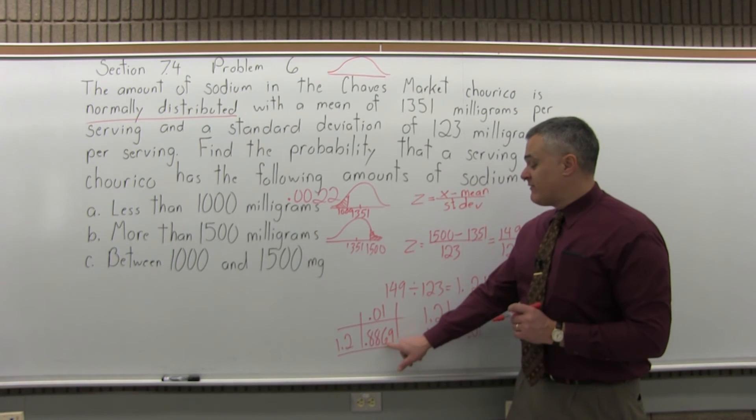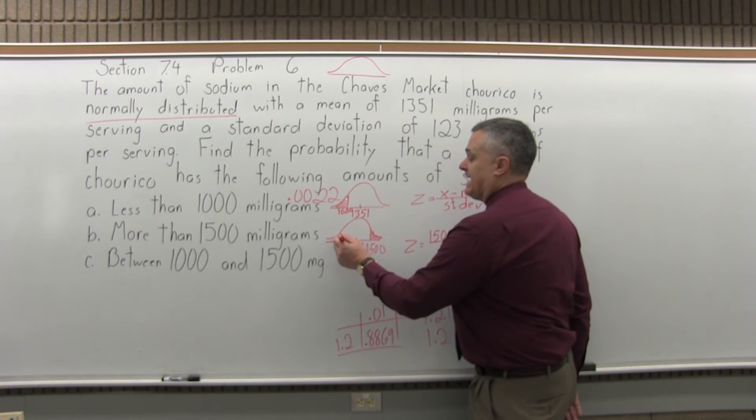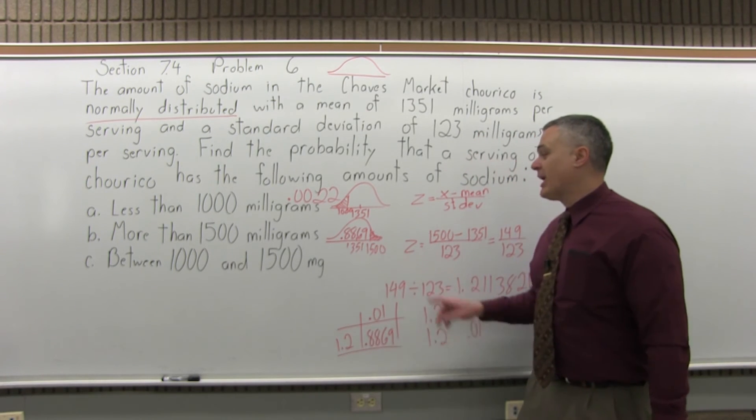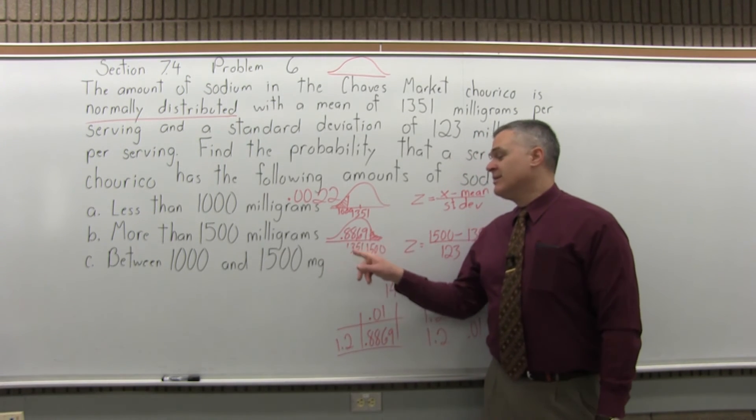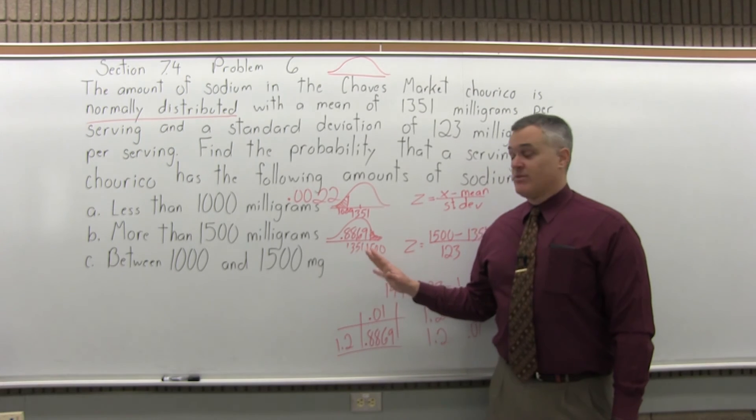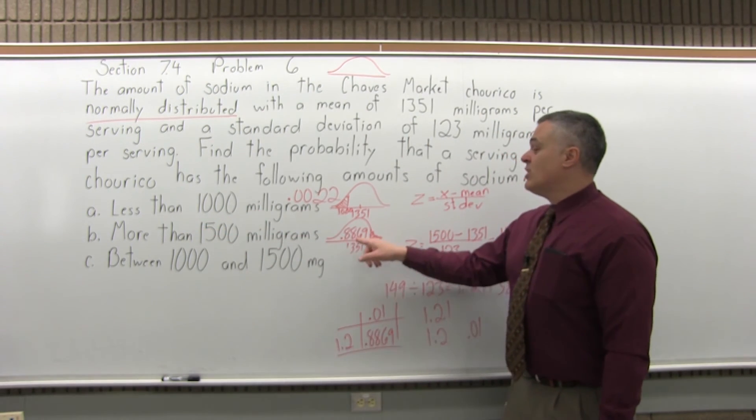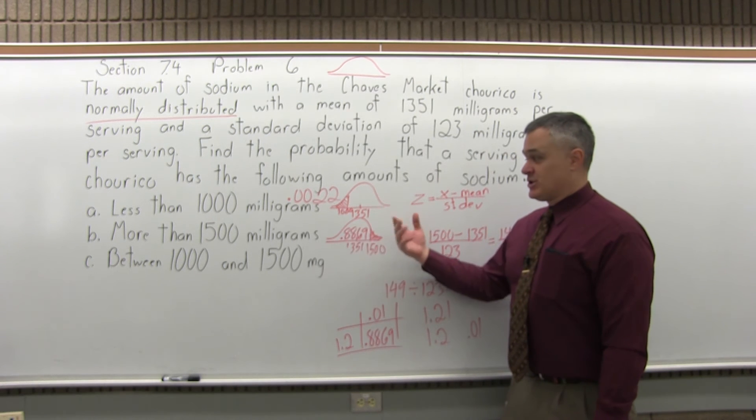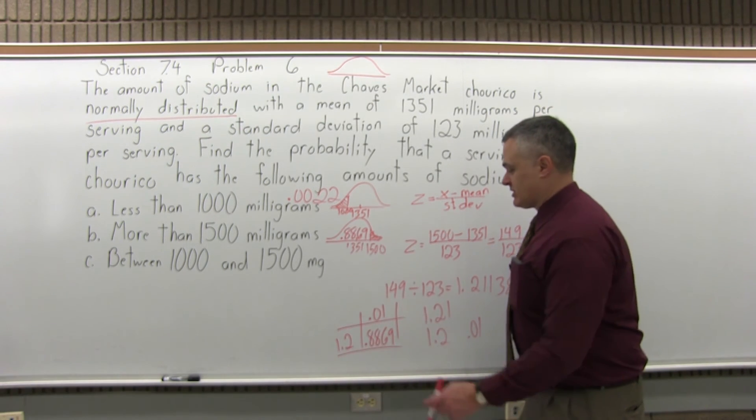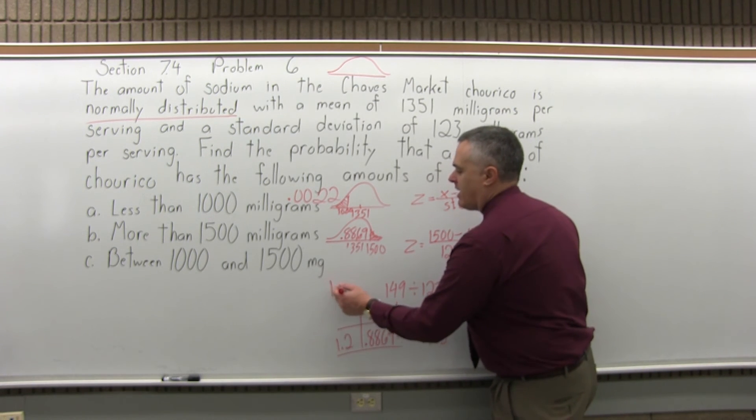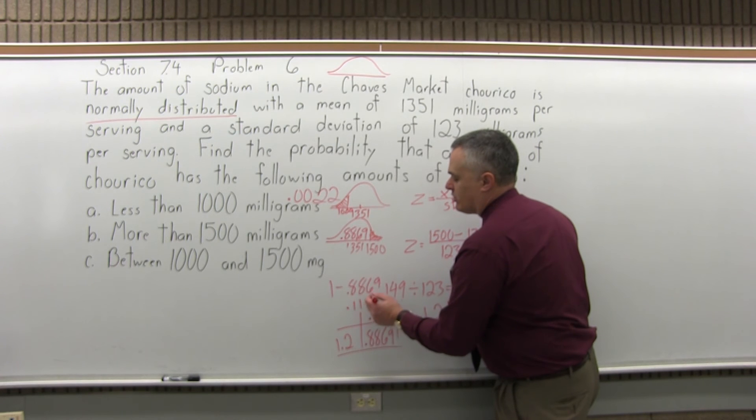Now remember, that value from the chart, that .8869, is not the answer we're looking for. That's the blank region of my drawing, the less than part that we're not interested in; the question asks more than. So I need to do 1 minus the value from the chart for any type of more than question or greater than. So 1 minus .8869 would be .1131.